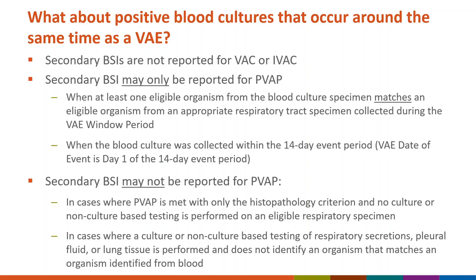Now let's review how a BSI can be determined secondary to VAE. A secondary BSI may only be recorded for PVAP and only when at least one organism from the blood culture specimen matches an organism from an appropriate respiratory tract specimen collected during the VAE window period, and the blood culture was collected within the 14-day event period. Any Candida species or yeast not otherwise specified, coagulase-negative staphylococcus, or enterococcus species identified from blood cannot be deemed secondary to a PVAP unless the organism was also identified from a pleural fluid or lung tissue specimen used to meet a PVAP criterion. Secondary BSIs are not reported for VAC or IVAC events.